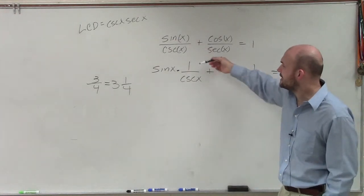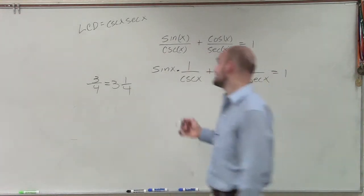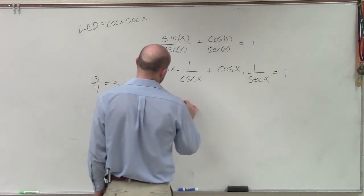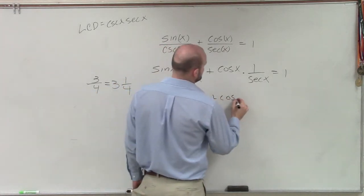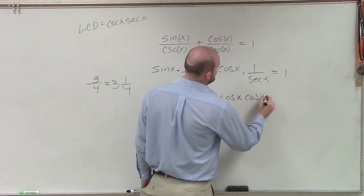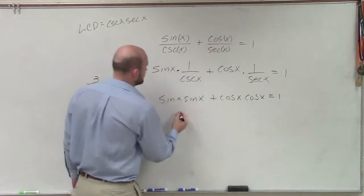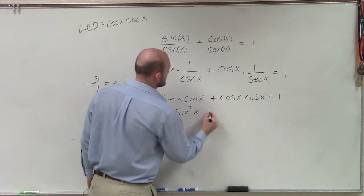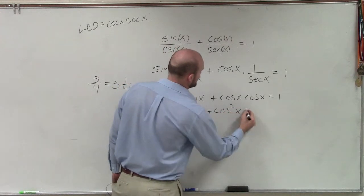I know that 1 over cosecant is sine. So therefore, I have sin(x) times sin(x) plus cos(x) times cos(x) equals 1. Well, therefore, that becomes sin²(x) plus cos²(x) equals 1.